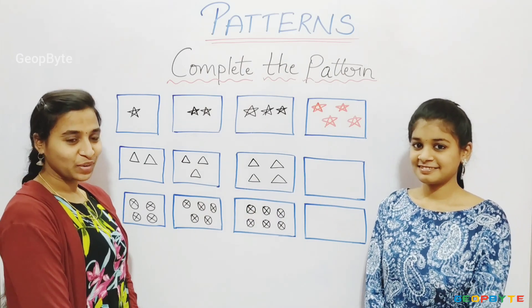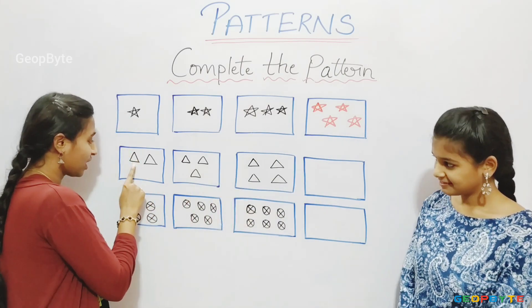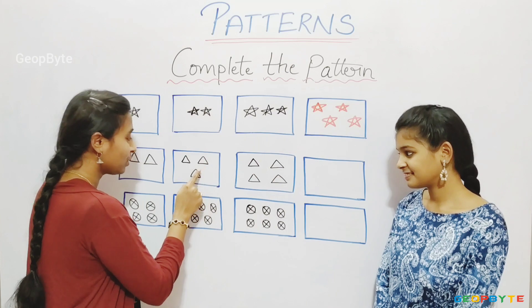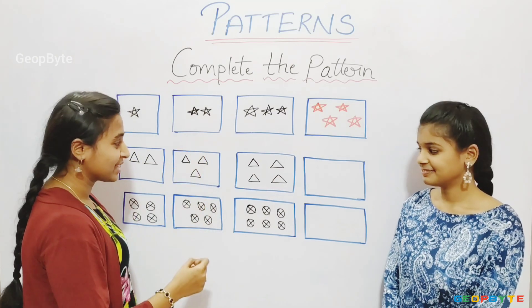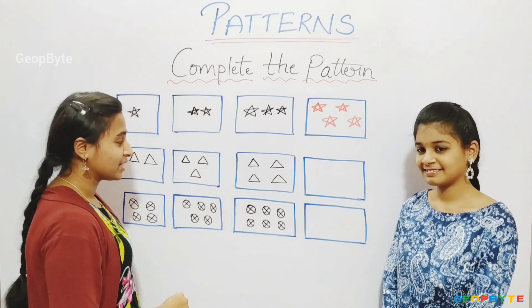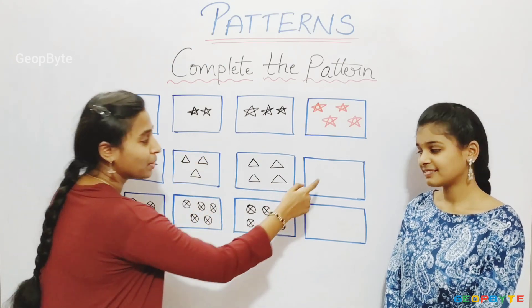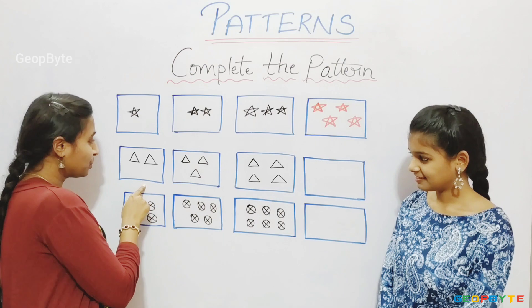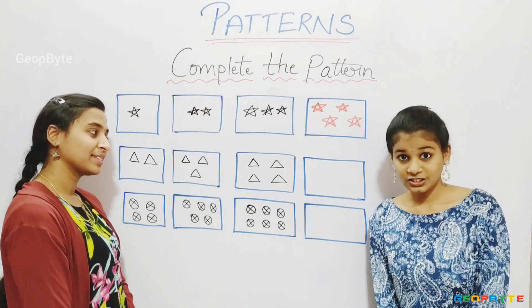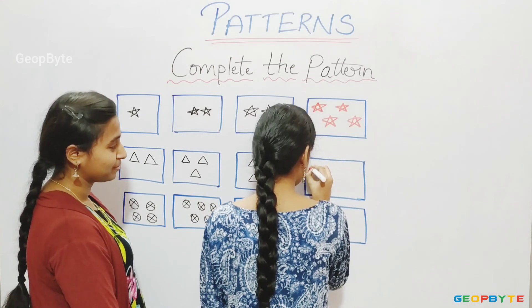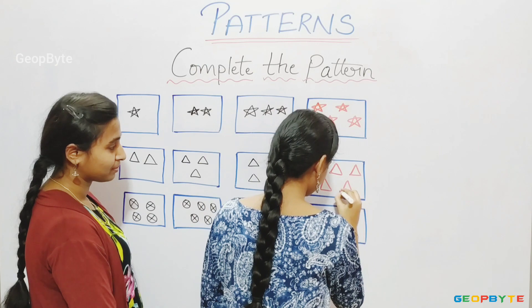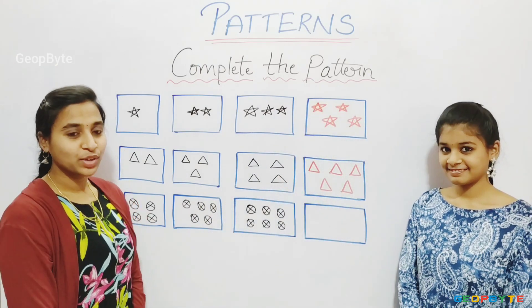Now let us go with this sequence: 1, 2, 3, 4 triangles. How many triangles will come in this box? 5. Let us draw 5 triangles.